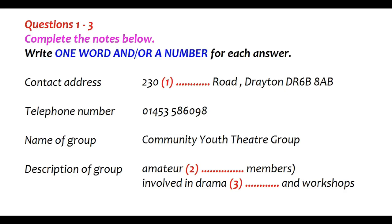Okay, telephone number — that's 01453 58609 8, isn't it? Yes. Right, now in the next part of the form I have to give information about our group. So, name of group — that's easy, we're the Community Youth Theatre Group. But then I have to describe it, so what sort of information do you think they want?